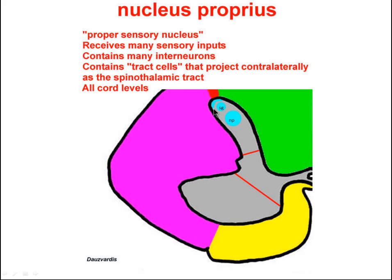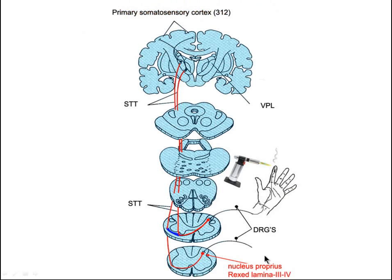Those incoming fibers travel in the lateral division of the dorsal root — A-delta, lightly myelinated. So those are lightly myelinated fibers that come in and synapse on nucleus proprius.